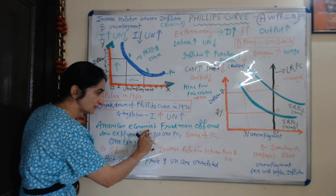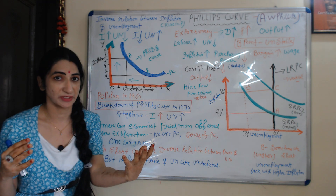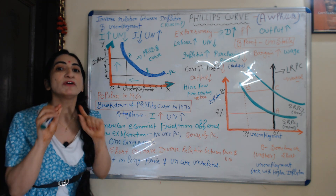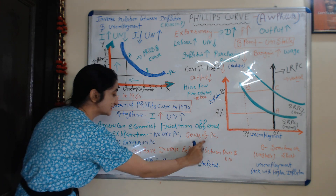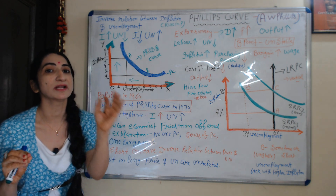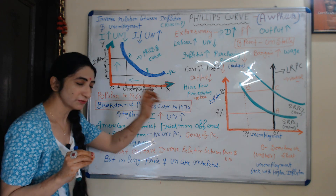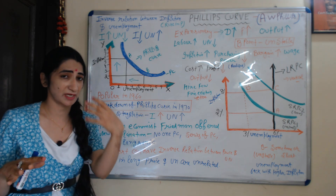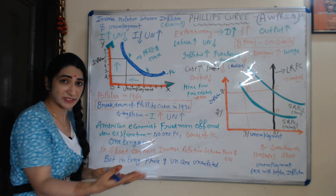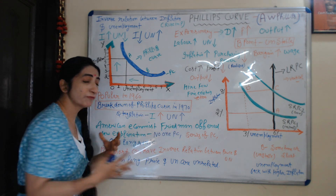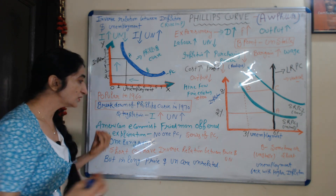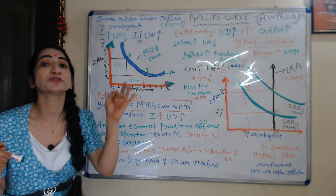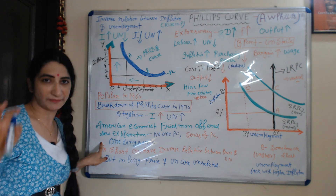American economist Friedman offered a new explanation. According to Friedman, there is not one Phillips Curve, but a series of short-run Phillips Curves and one long-run Phillips Curve. In the short time period, it can be possible to have an inverse relation between inflation and unemployment. But in the long time period, there is no relation between price and unemployment — they are unrelated to each other.